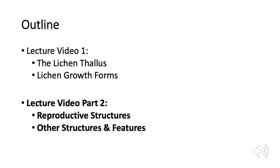So in part one, we talked about the lichen thallus, its internal structure, and the main three growth forms. Part two will focus on a lichen's reproductive structures and a few other external structures. These are some of what make a lot of lichens look as cool as they do, and they're pretty important to know if you want to identify any lichens beyond their most basic growth form.